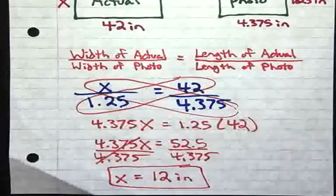Now I can solve my proportion. So we're going to cross multiply. So when we do that, we get X times 4.375 which gives us 4.375X equals our other cross product which is 1.25 times 42. And when I simplify this down, I get 4.375X equals 1.25 times 42. And I get 52.5.